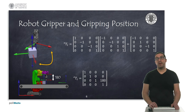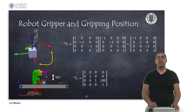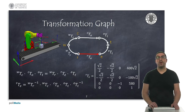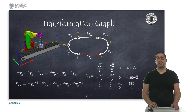From the gripper's manufacturer, we know that the gripper is shifted 180 millimeters with respect to the end effector frame — the flange of the robot — in the z-axis, which leads to the transformation T_et. Now, we can compute the transformation of the robot's end effector with respect to its base: the transformation T_re, highlighted with a red arrow in the transformation graph.